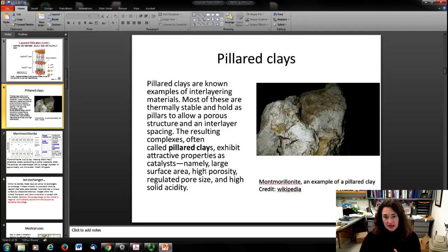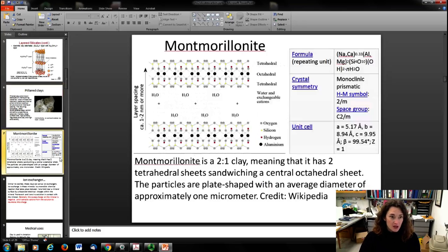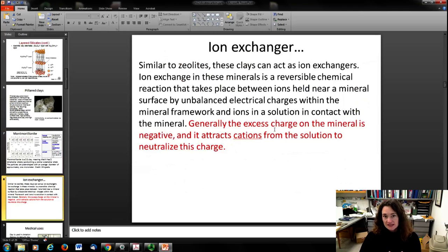This is an example of montmorillonite, a pillared clay. Here's the structure of montmorillonite in particular. It's a 2-1 clay with two tetrahedral sheets sandwiching an octahedral sheet. The particles are plate-shaped with diameters of about one micrometer. These are really super useful because they can act as ion exchangers like zeolites. Ion exchange in minerals is a reversible chemical reaction between ions held near a mineral surface by unbalanced electrical charges within the framework and ions in solution contact. The excess charge on the mineral is negative, so it attracts cations from solution and neutralizes the charge, giving it really interesting applications and properties.